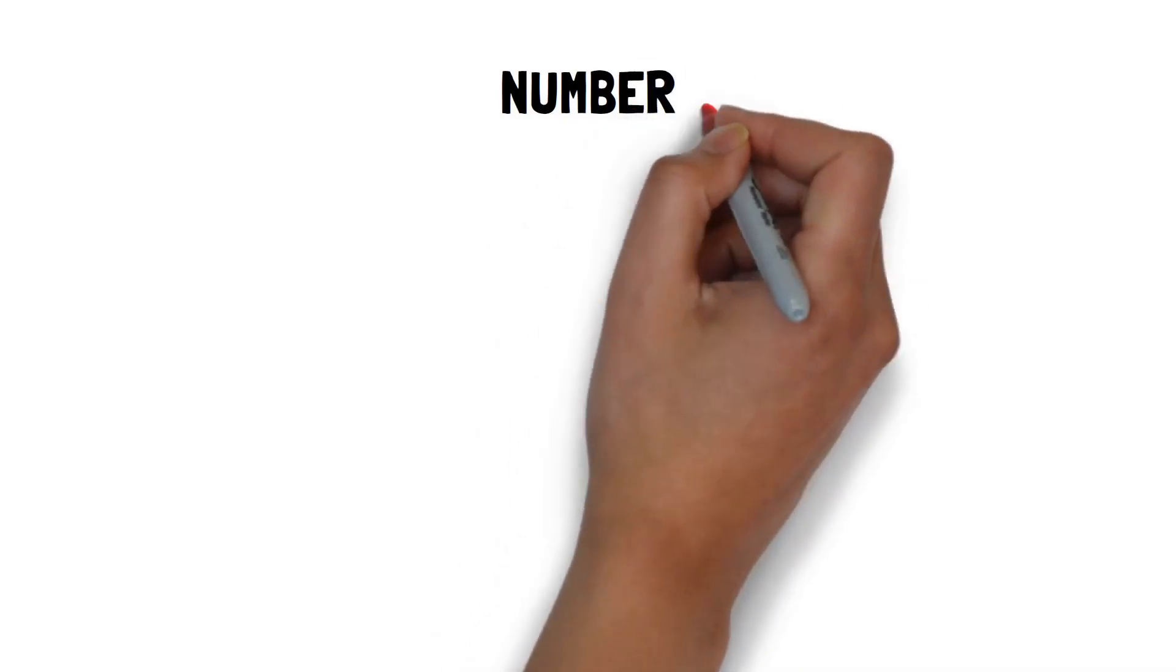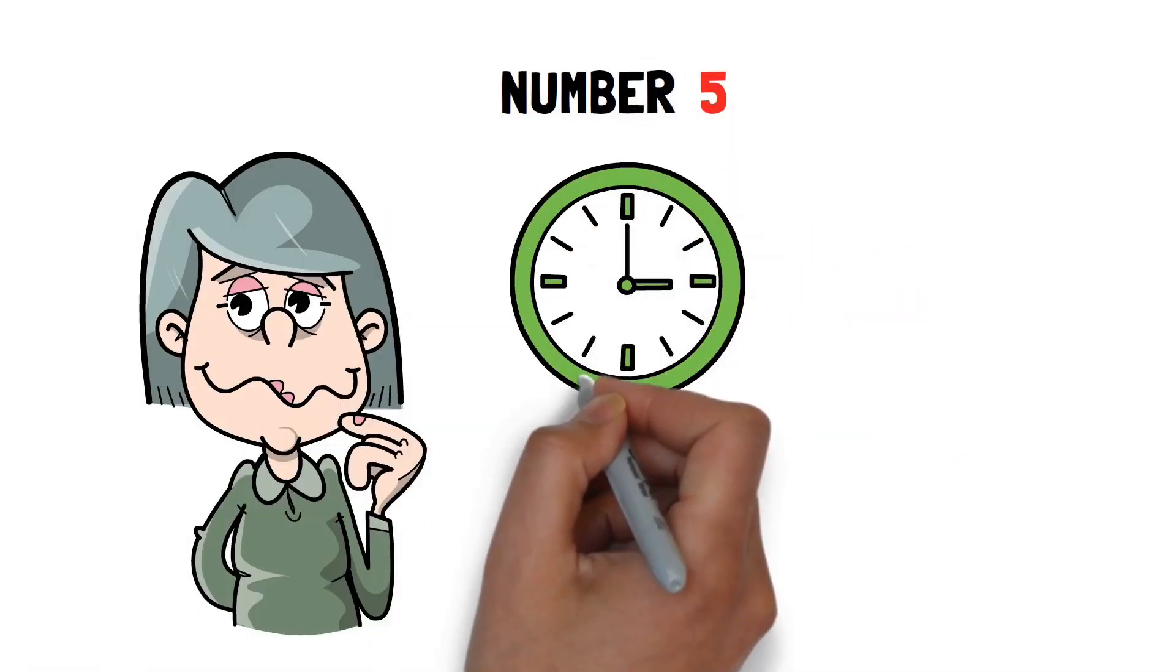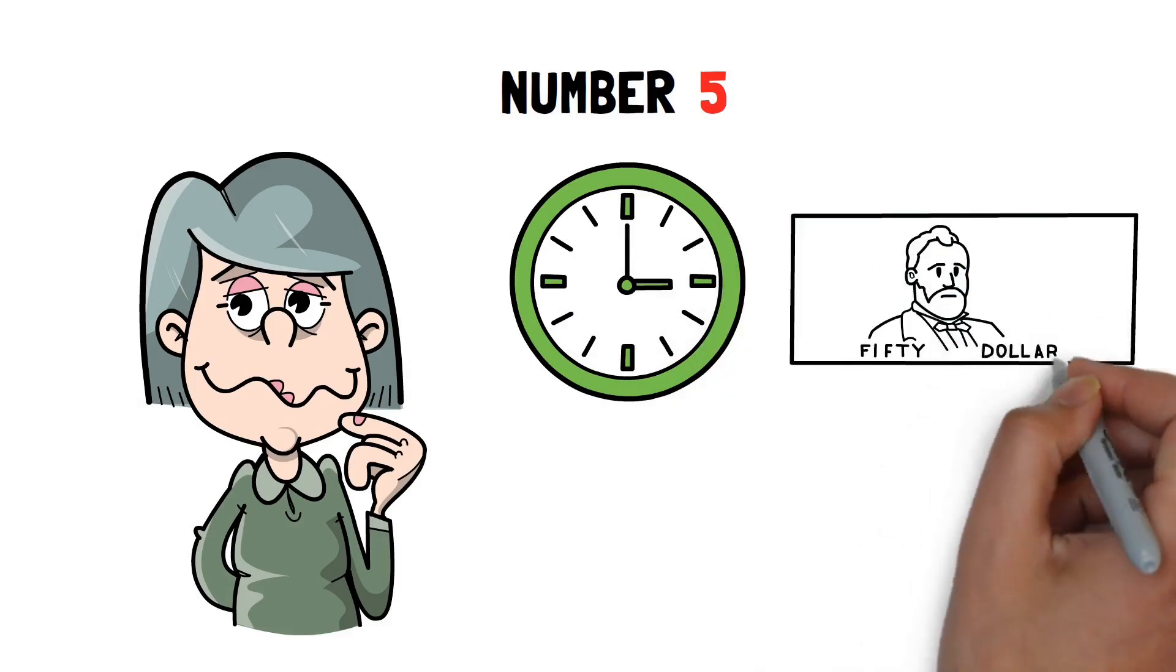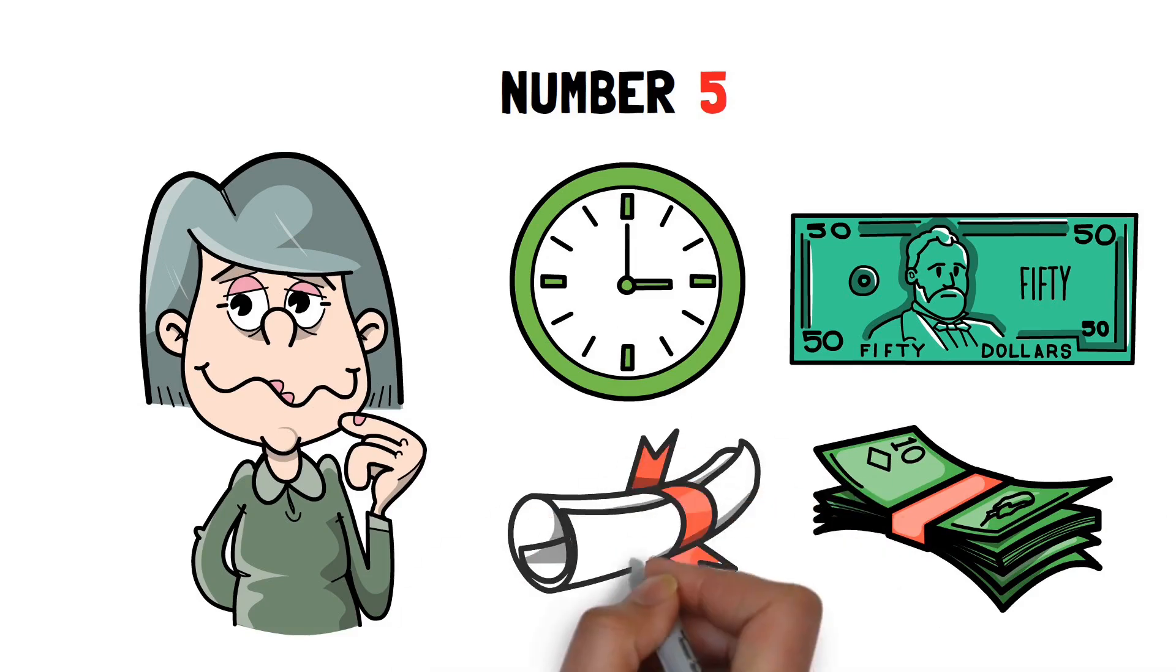Number five. Poor people choose to be paid based on time. How often do you hear people say, I deserve to be paid 50 bucks an hour or 60 bucks? I have a degree from such and such a school.